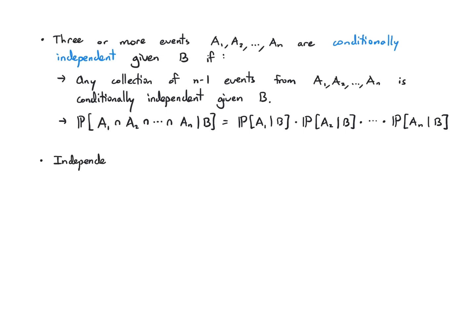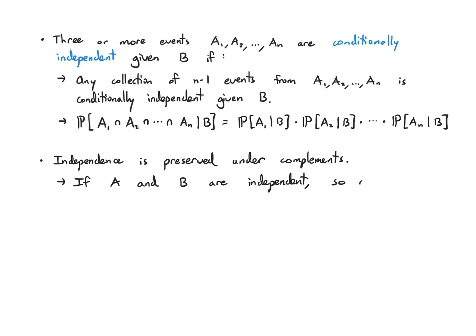The last property to remember is that independence is preserved under complements. If A and B are independent, then automatically A and B-complement, A-complement and B, and A-complement and B-complement are all independent as well. This is very natural: if you know whether something occurs, you also know whether it does not occur.